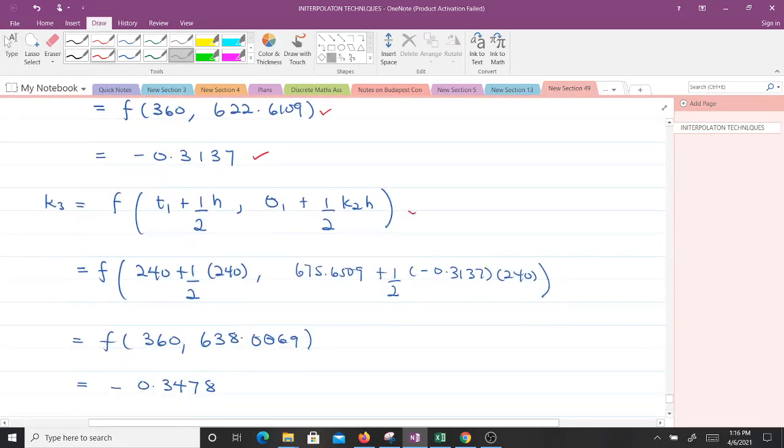Finally, for K3, we use this relation. When you make substitution, you get this. Making computation will give you this. And putting this into F of T theta, you will get negative 0.3478.